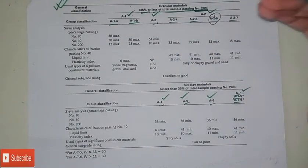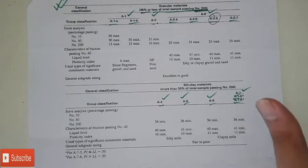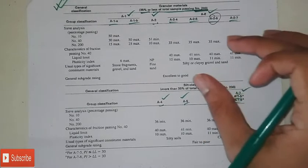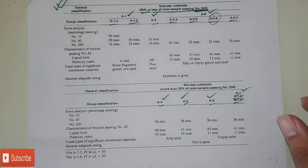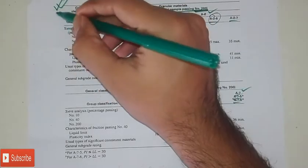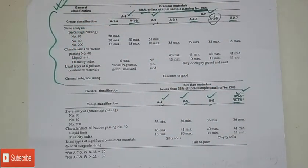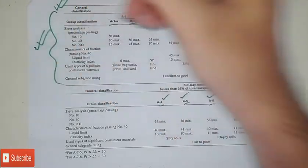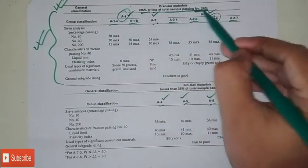As we can see from the sieve analysis, soil is classified using a table. The first step is to determine if it falls into A1, A2, or A3.